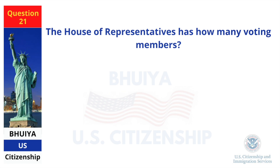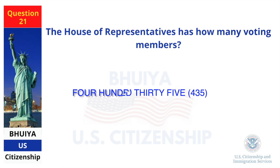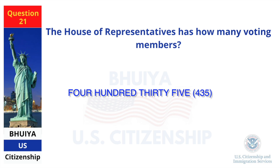The House of Representatives has how many voting members? 435.